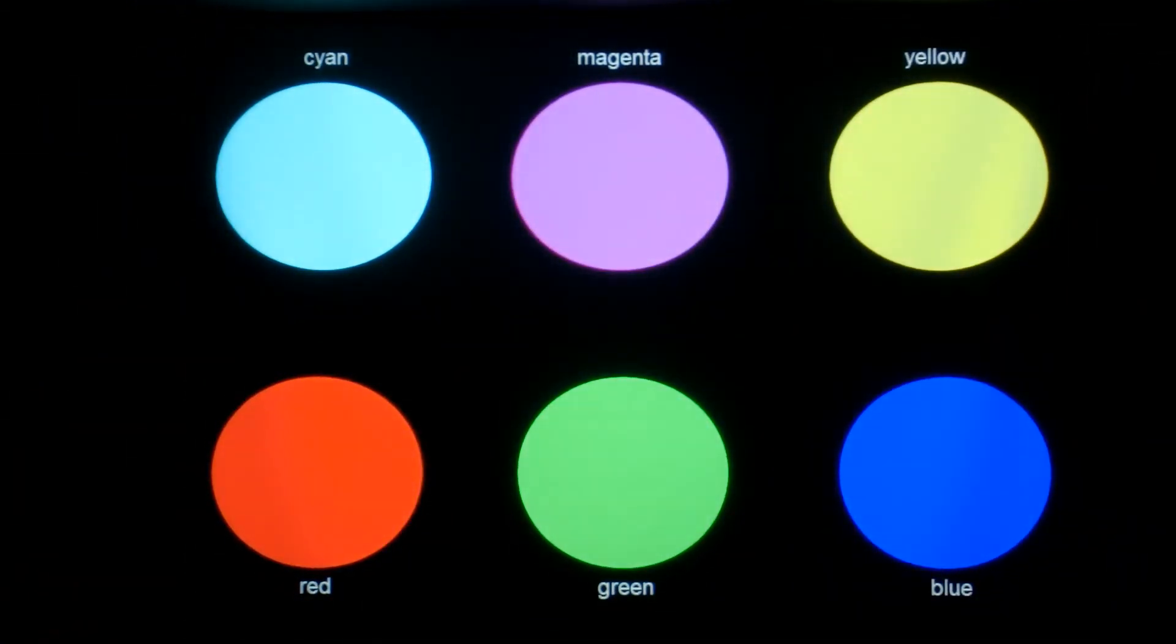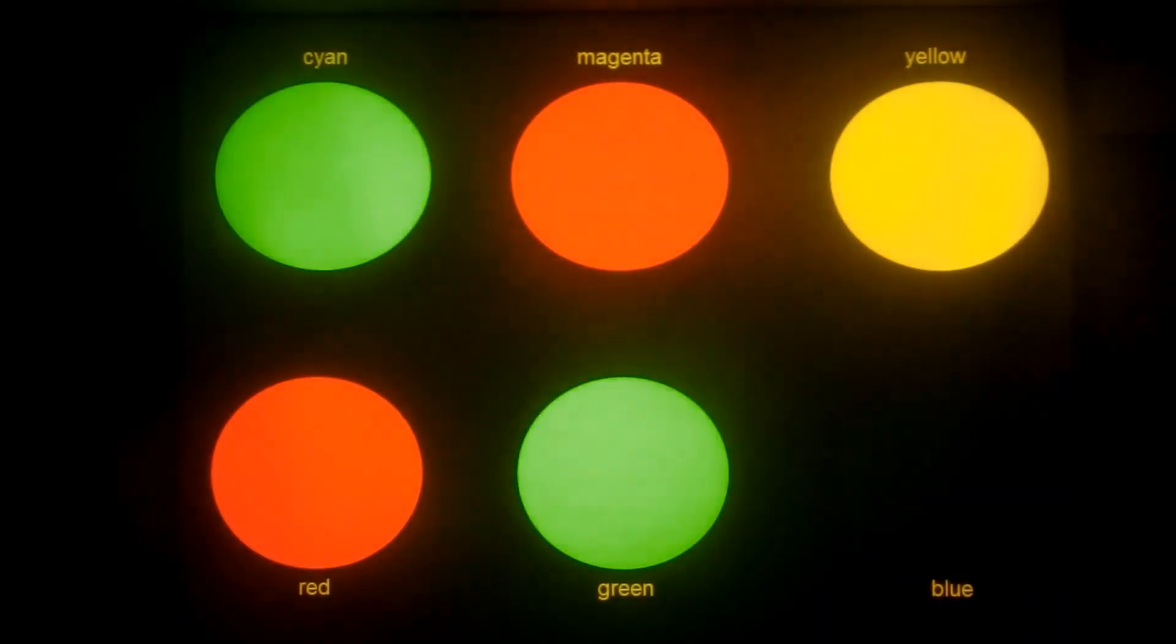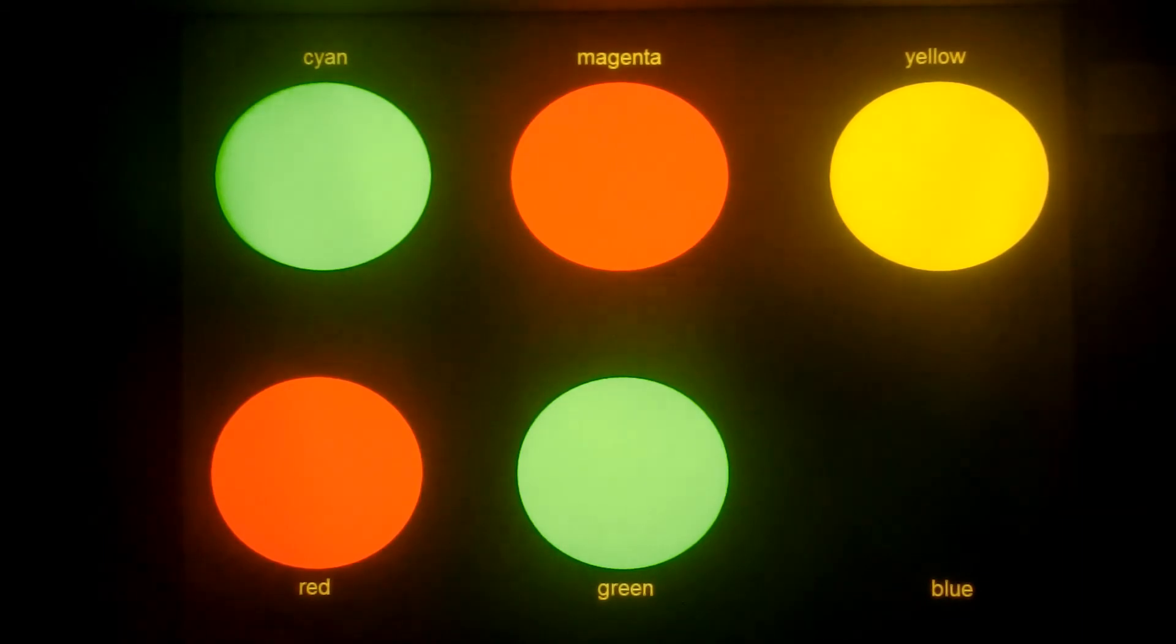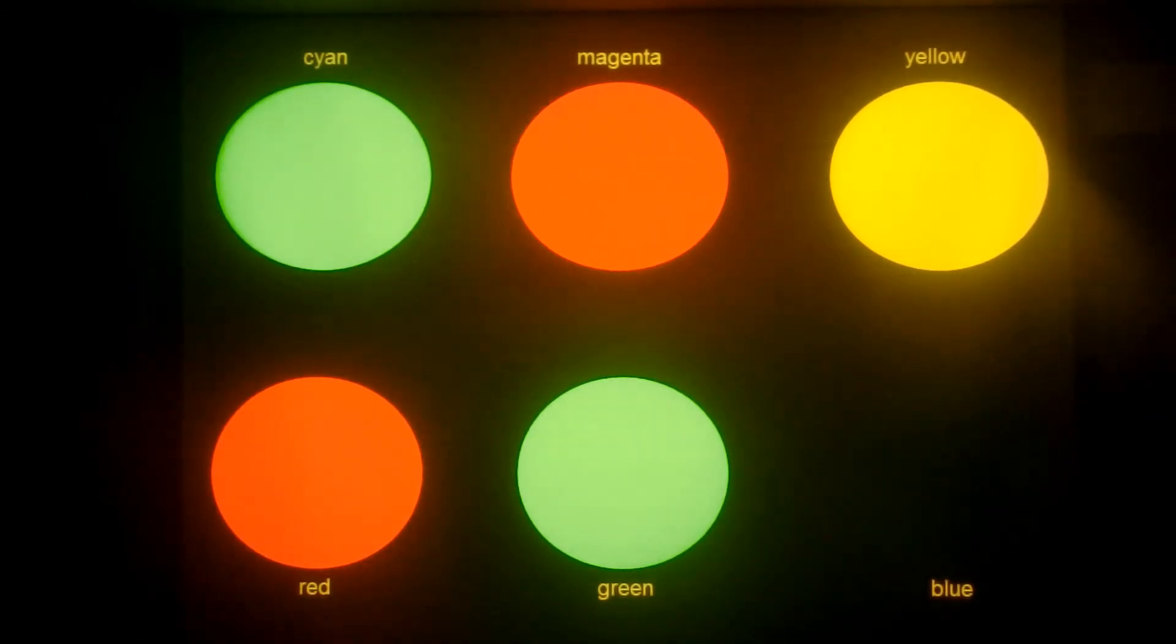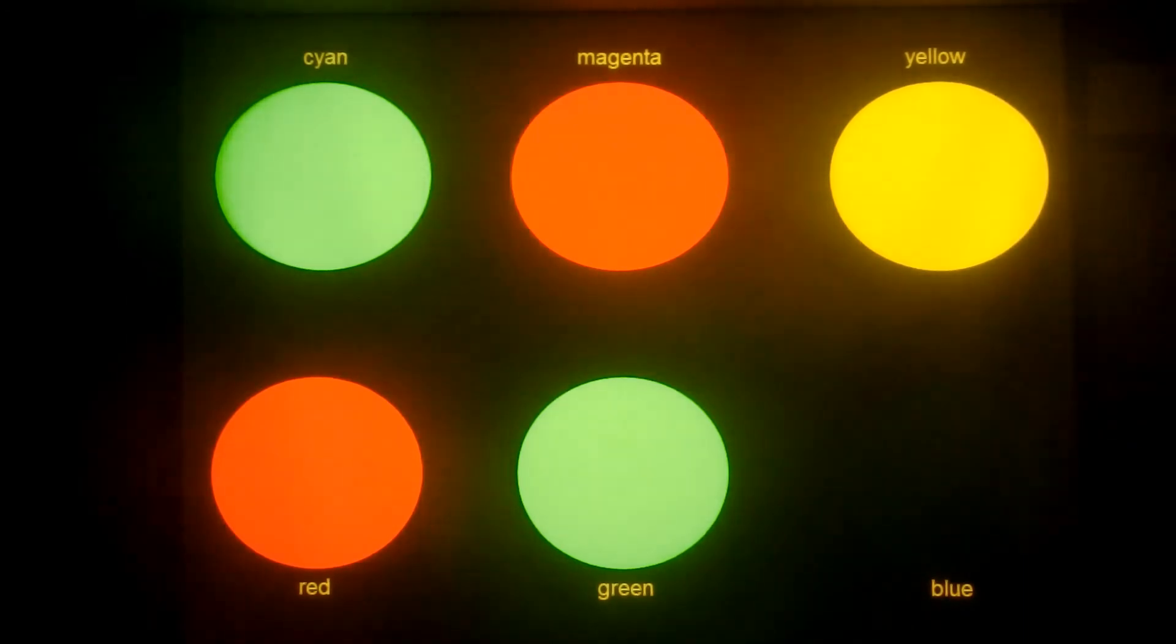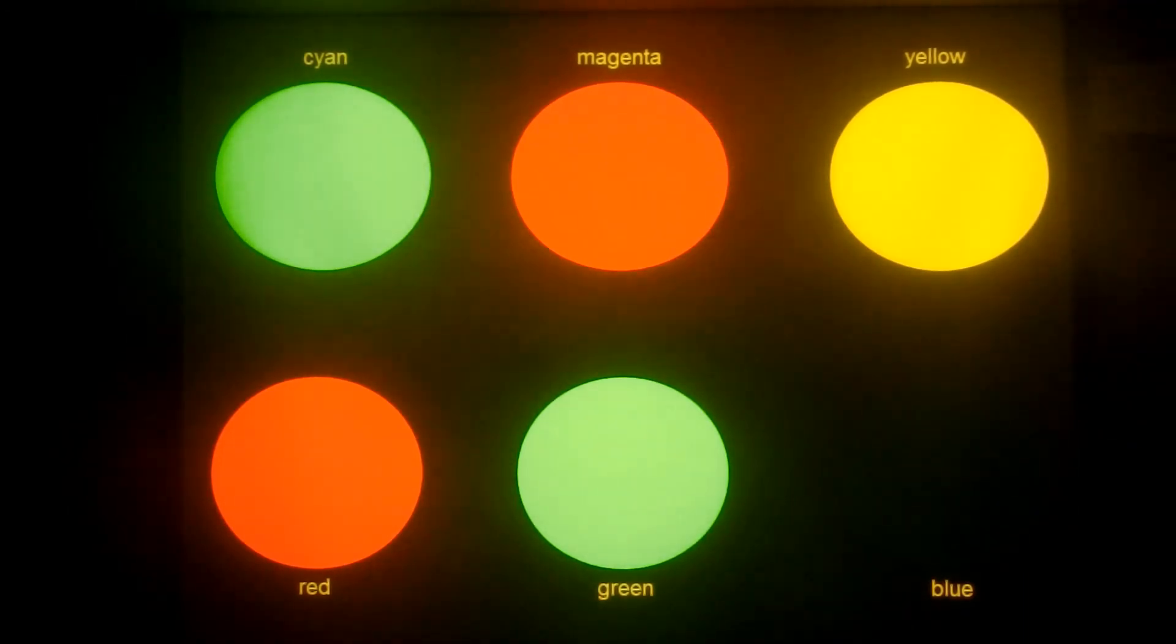The yellow filter will block out blue light, but red and green will pass through. So the red still appears red, the green appears green, but the magenta appears red, the cyan appears green, yellow appears yellow, and the blue disappears.